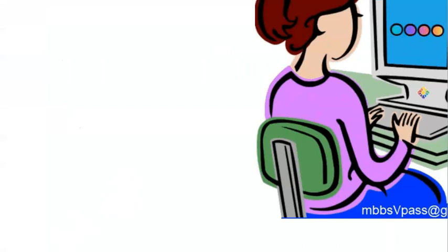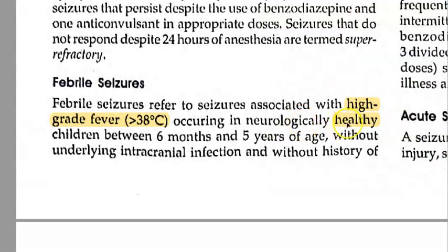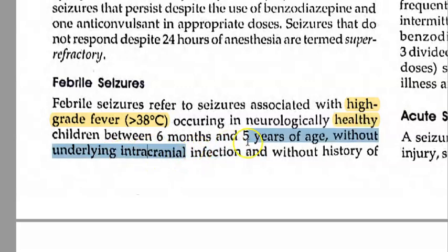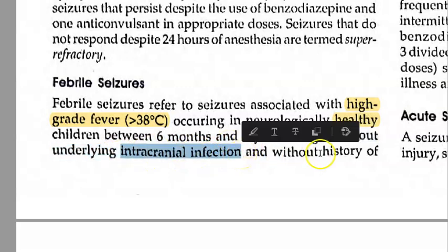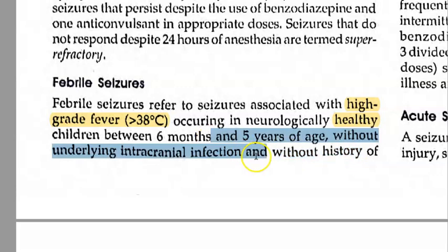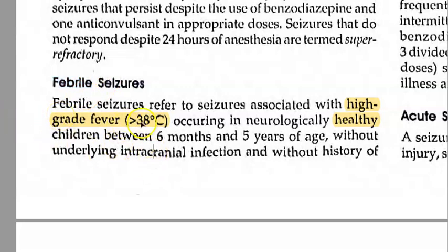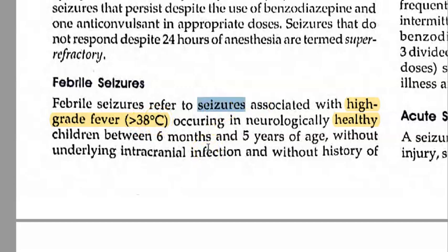Now we are talking about febrile seizures. What do you mean by febrile seizures? First of all, the condition is the child should be healthy so far. It should be between 6 months to 5 years of age. It should have no intracranial infection, no history of such seizures. But now it gets a high grade fever, greater than 38 degrees centigrade, and the child gets an episode of seizure during this febrile illness.